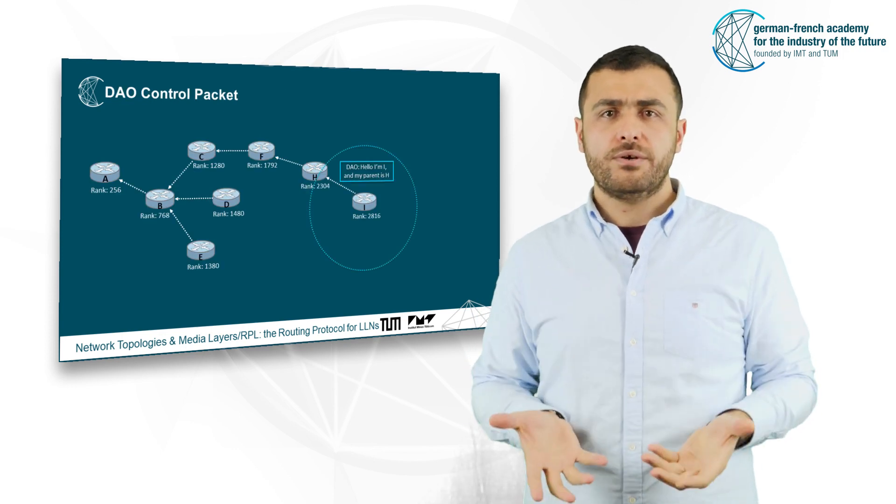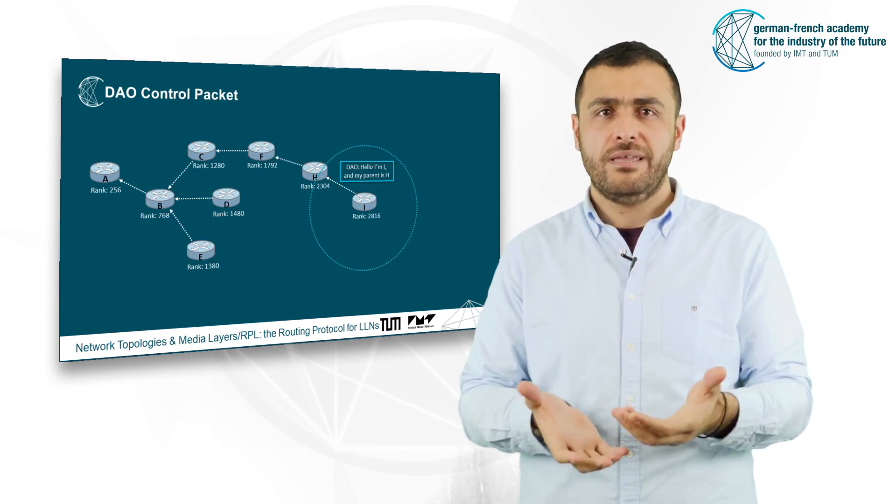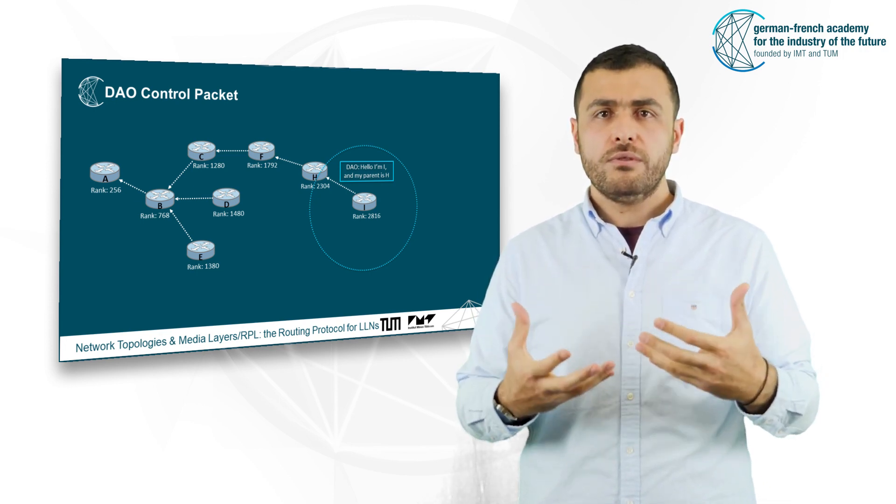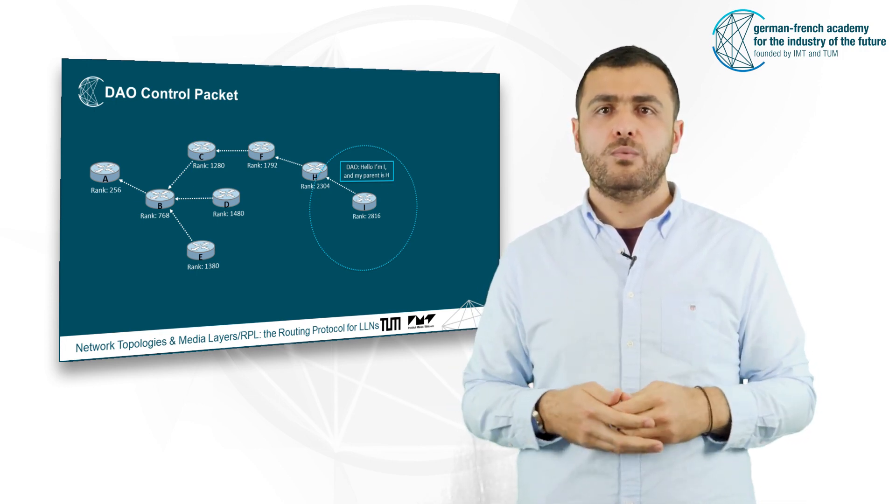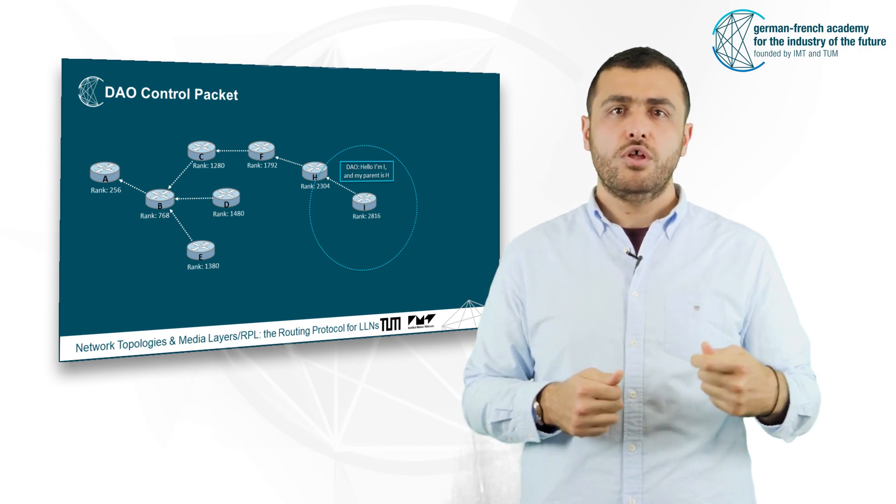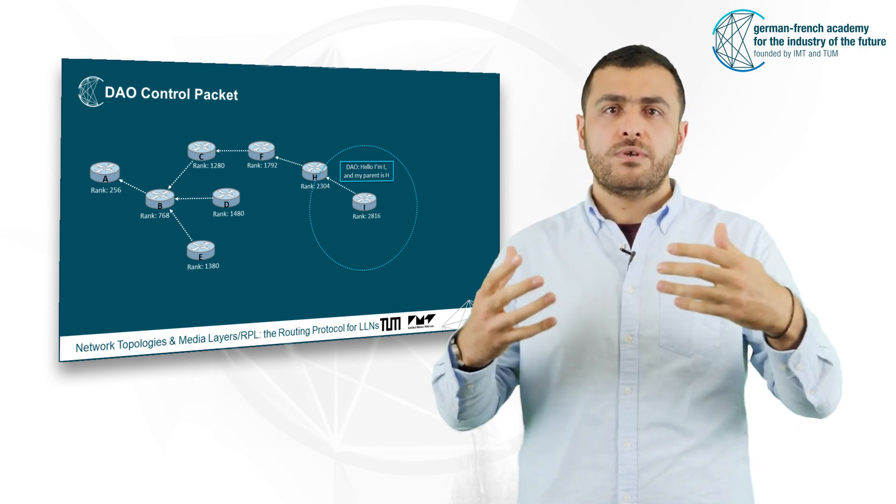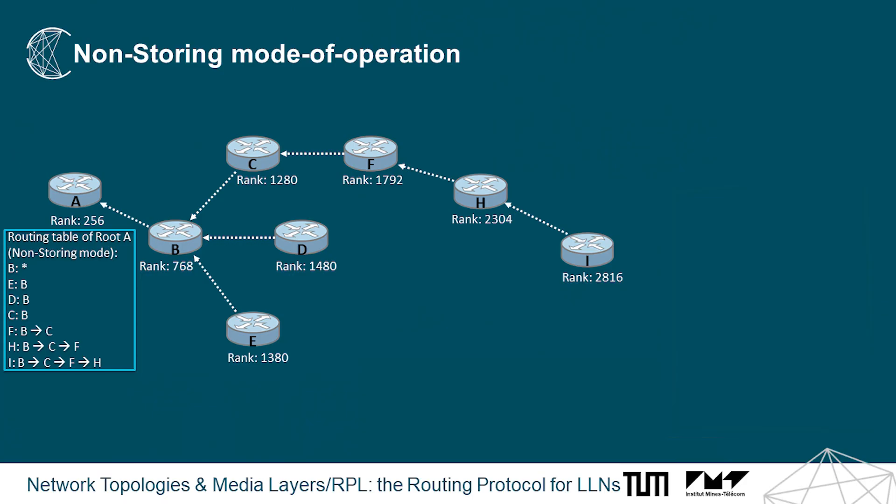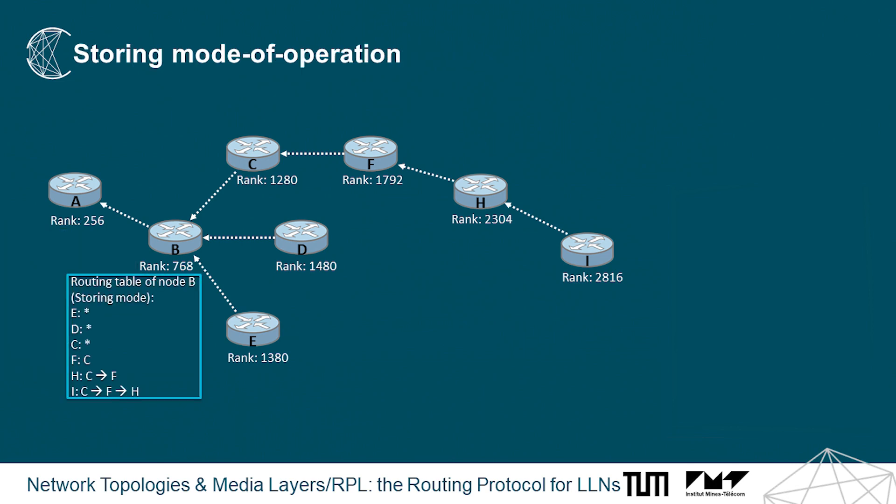Without entering too much into the details, the principle is that when a node selects a preferred parent, it will send a DAO to its parent toward the root to advertise its position in the topology. This position will be stored only in the root, non-storing mode, or in intermediate nodes, storing mode.